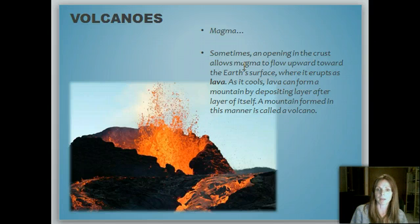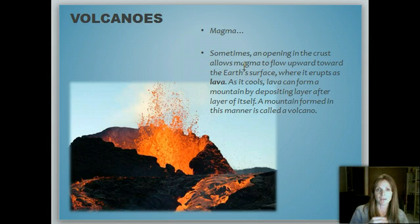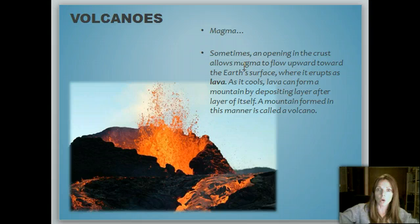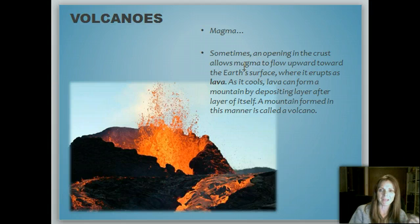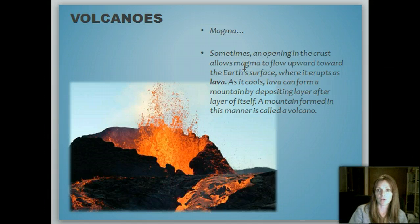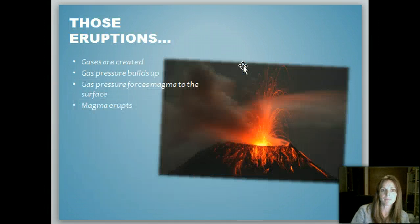Where magma reaches the surface, it erupts as lava. As it cools down, lava can form a mountain — it deposits layer after layer and forms a mountain that gets higher and higher. A mountain formed in this manner is called a volcano. Sometimes they build really huge, and your lesson shows a before and after of Mount St. Helens after a huge eruption, because when all that pressure builds and erupts hugely, it can blow some of that mountain apart. There are still many active volcanoes today, even in Hawaii.